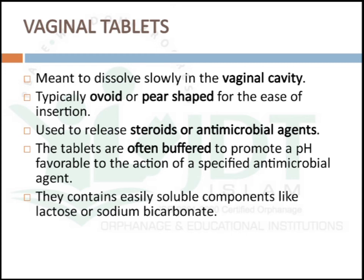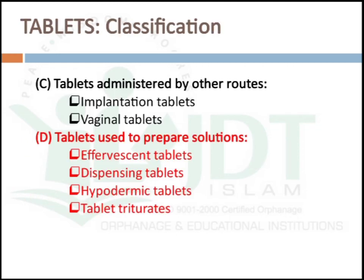Vaginal tablets are meant to dissolve slowly in the vaginal cavity. They are typically ovoid or pear-shaped for easy insertion and are used to release steroids as well as antimicrobial agents. Tablets are often buffered to promote a pH favorable to the action of specified antimicrobial agents, and they contain easily soluble components like lactose or sodium bicarbonate. The last group is tablets used to prepare solutions, including effervescent tablets, dispensing tablets, hypodermic tablets, and tablet triturates.